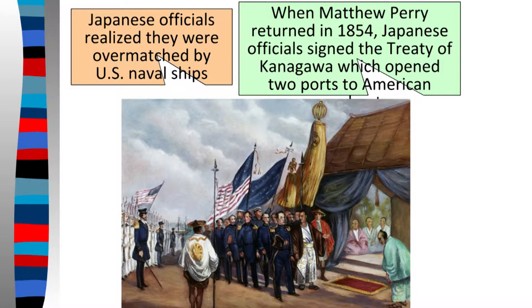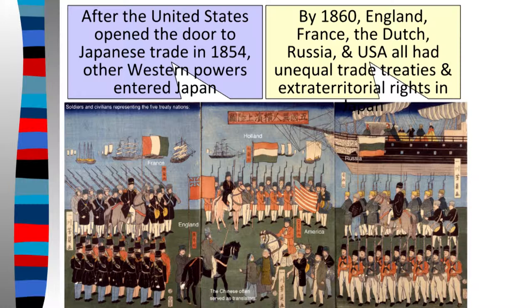After the United States opened trade with Japan in 1854, a lot of other Western powers followed. By 1860, England, France, the Dutch, Russia, and the US all had really unequal trade treaties and extraterritorial rights that they started to impose on Japan.